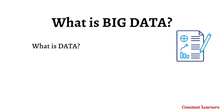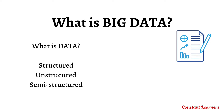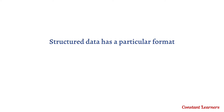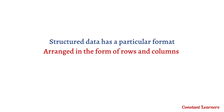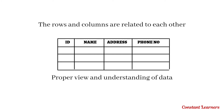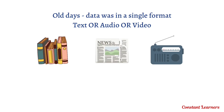We have already discussed what data is and the different types of data — thank you for the amazing response on that video, I've linked it above. So, data is of three types: structured, unstructured, and semi-structured. Structured data has a particular format where data is arranged in rows and columns that are related to each other, meaning every piece of content stored as structured data is related to one another in some way.